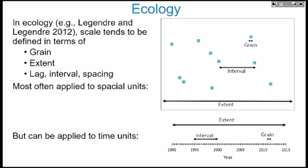Grain refers to the size of a unit of measurement, and extent refers to the size of the area you're looking at in terms of measurements. Most often these are applied to spatial units — the size of the sampling unit and the extent of the study area — but they can also be applied to time units. More neglected, and what I'm going to concentrate on, is the interval or spacing between samples. A lot of ecologists ignore this interval completely, but I think it's very important.